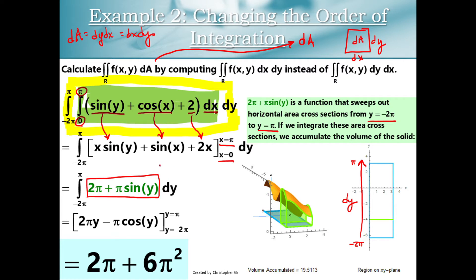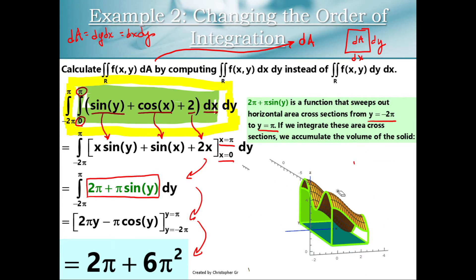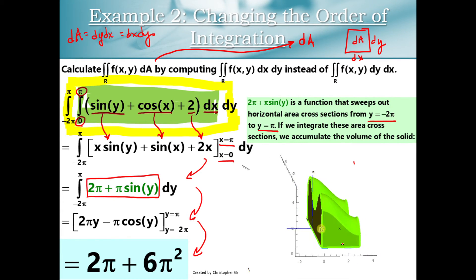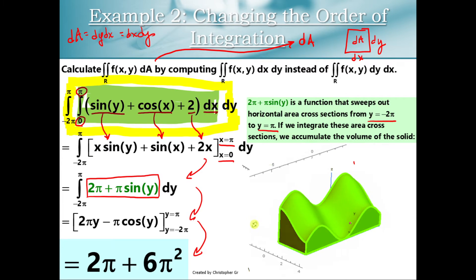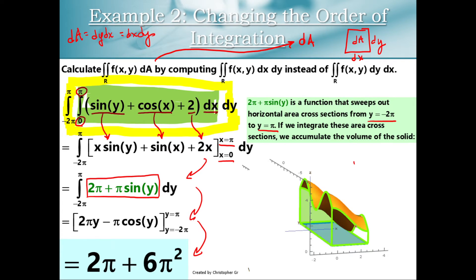Guys, these are calculations where I'm skipping some steps. My expectation is that you'll be able to fill those in. I have a worksheet for you where you'll get to practice these sorts of problems and fill in the algebraic and numerical steps that are missing. You are going to see the same exact shape — the same surface, the same region on the xy plane. All we did was sweep out our area cross sections in a different direction, but we get the same solid region and the same volume.